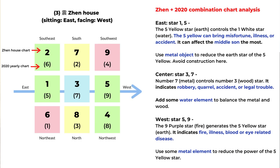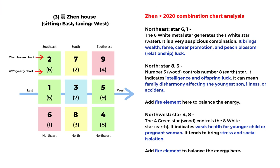The west has star numbers five and nine. The number nine purple star is fire element and it generates the number five earth element. It can indicate fire or disease related to fire, such as issues with blood, heat, or the head. We can add metal element here because of the number five earth star. The northeast has a six and one combination. The six star is metal element and generates the number one white star, the water element. Both are auspicious stars, and this combination can bring wealth, fame, career promotion, and peach blossom luck. So the northeast is one of the best areas — the same as the southwest — for the Zheng house this year.